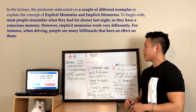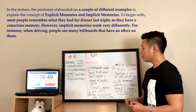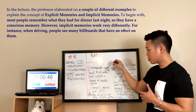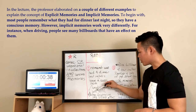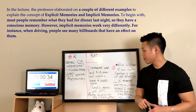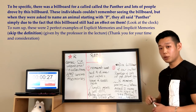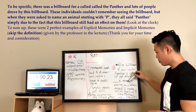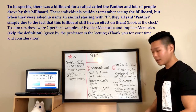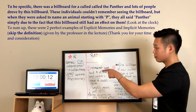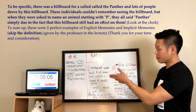Sample response: 'In the lecture, the professor elaborated on a couple of different examples to explain the concept of explicit memories and implicit memories. To begin with, most people remember what they had for dinner last night, so they have a conscious memory. However, implicit memories work very differently. For example, when driving, people see many billboards that have an effect on them. To be specific, there was a billboard for a car called the Panther, and lots of people drove by it. These individuals did not remember seeing the billboard, but when asked to name an animal starting with P, they all said Panther, simply due to the fact that this billboard still had an effect on them. To sum up, these were two perfect examples of explicit memories and implicit memories given by the professor in the lecture.'